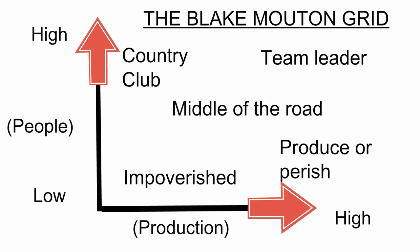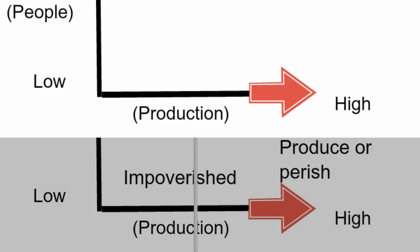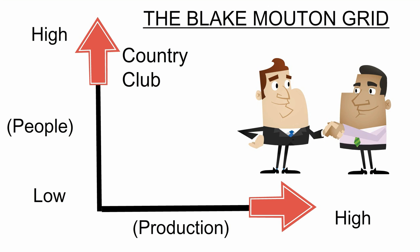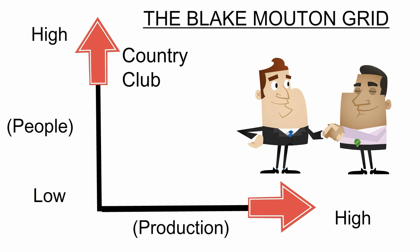The five leadership styles move from low concern with people and production through to high concern with both of these dimensions. First: Country Club Leadership. This sort of leader believes that as long as team members are content, they'll be motivated to work hard. Country club leaders like to create a relaxing and appealing place to work. However, the country club leader does not focus enough on getting the job done.